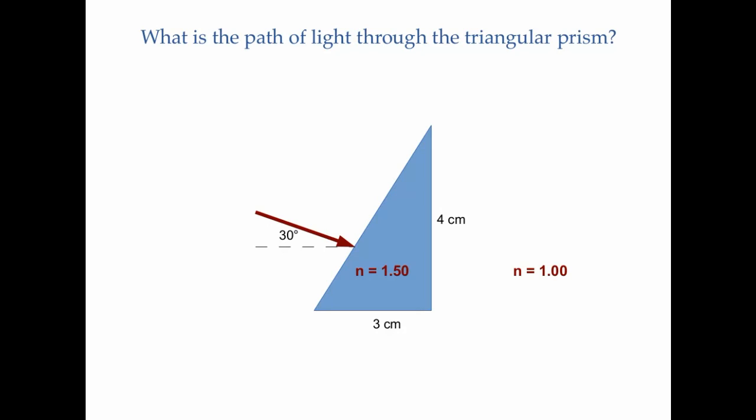And I ask, what is the path of light through the triangular prism? So we can solve this problem by first noting that the angle in the bottom left-hand corner of the prism is 53.13 degrees. That's simply the arctangent of 4 divided by 3.